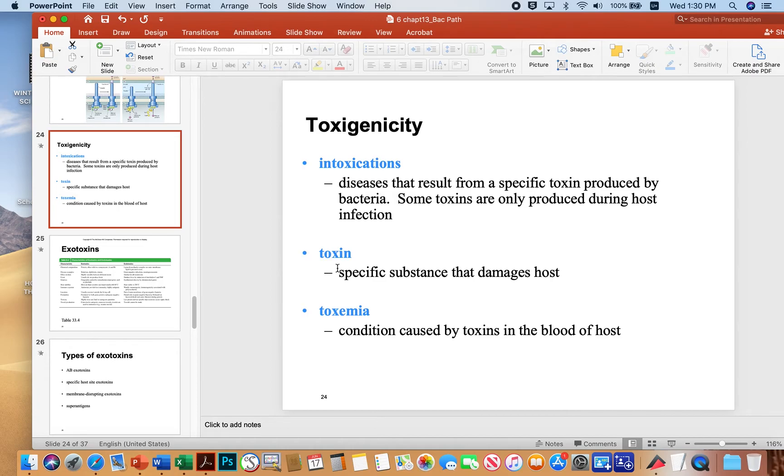So a toxin is just a specific substance that induces some kind of host damage. And toxemia is a general term for toxins in the blood.